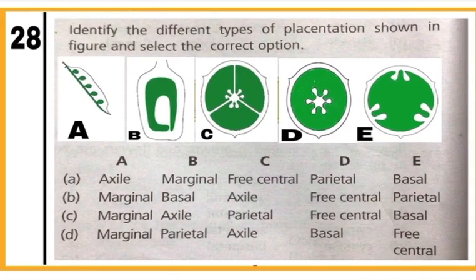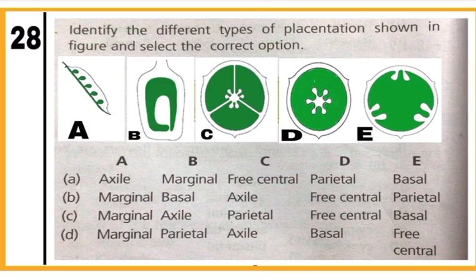Question 28: Identify the types of placentation. Placentation is the arrangement of ovules within the ovary. Option B is the correct match. Figure A shows marginal type, B shows basal type, C shows axile type, D shows free central type, and E shows parietal type of placentation. Mark B as the correct answer.